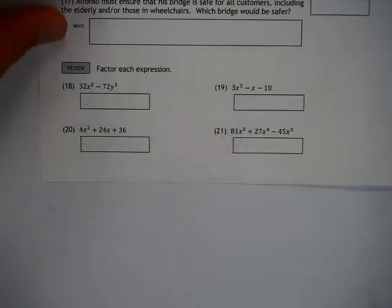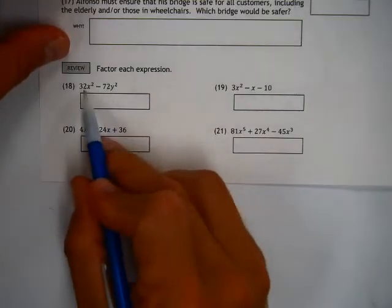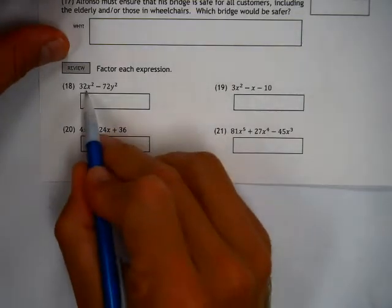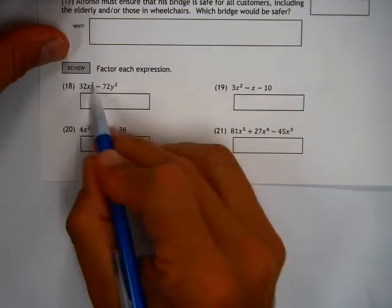So for factoring each expression here, this one looks crazy at first, but it gets a little bit better. It's an x squared and a y squared, so we don't have a lot of familiarity with that, except for the fact that they're both perfect squares, x squared and y squared are.